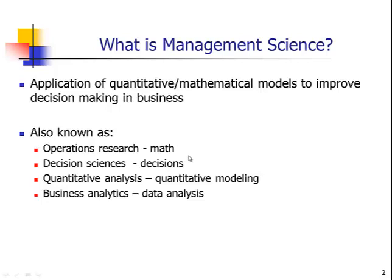There are other names for Management Science, and these terms are similar with emphasis on different aspects. Operations research has more to do with the math behind the models as opposed to the applications. Decision sciences emphasize decision-making. Quantitative analysis is a term used in different fields — in finance it could mean financial engineering, and in chemistry it might mean analytic chemistry. Business analytics emphasizes data collection and statistical analysis.